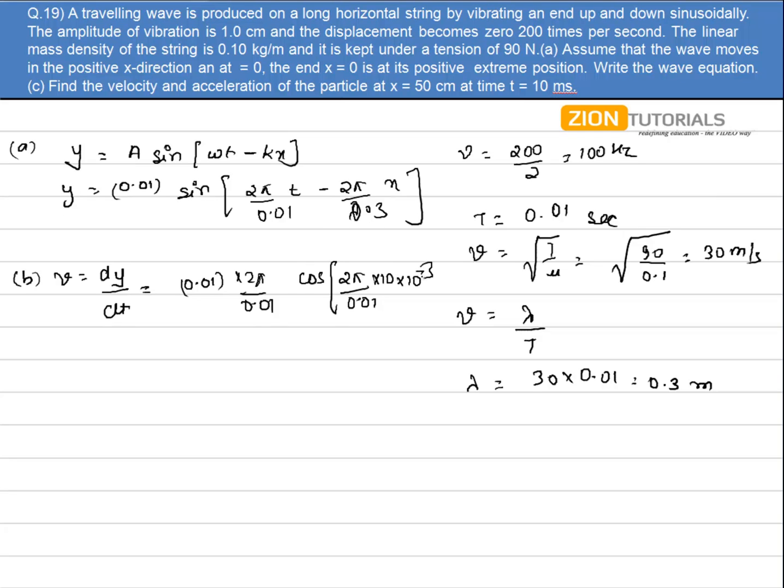So it will be 10 × 10^-3 minus 2π/0.3 × x. The x value is given as 50 centimeters or 0.5 meters. Solving this equation, I get the value of velocity as 5.4 meters per second.